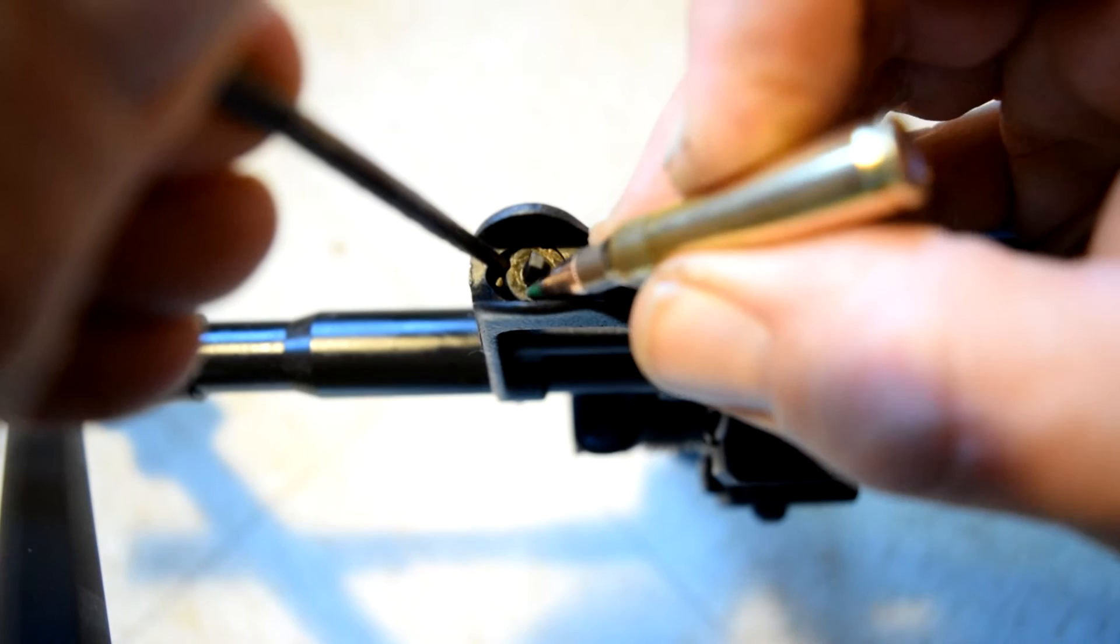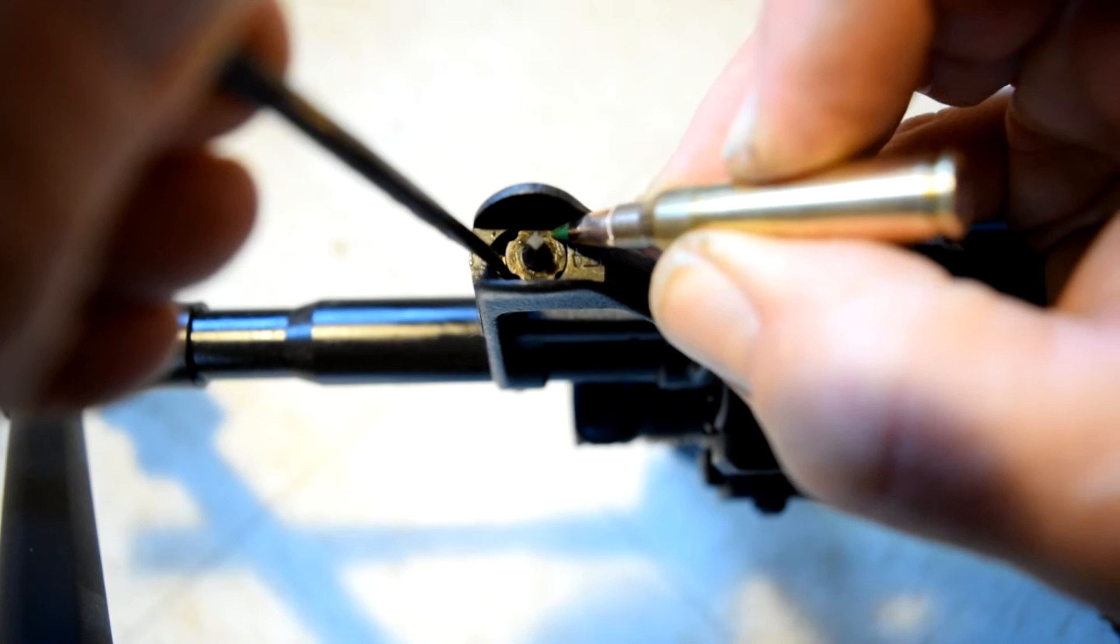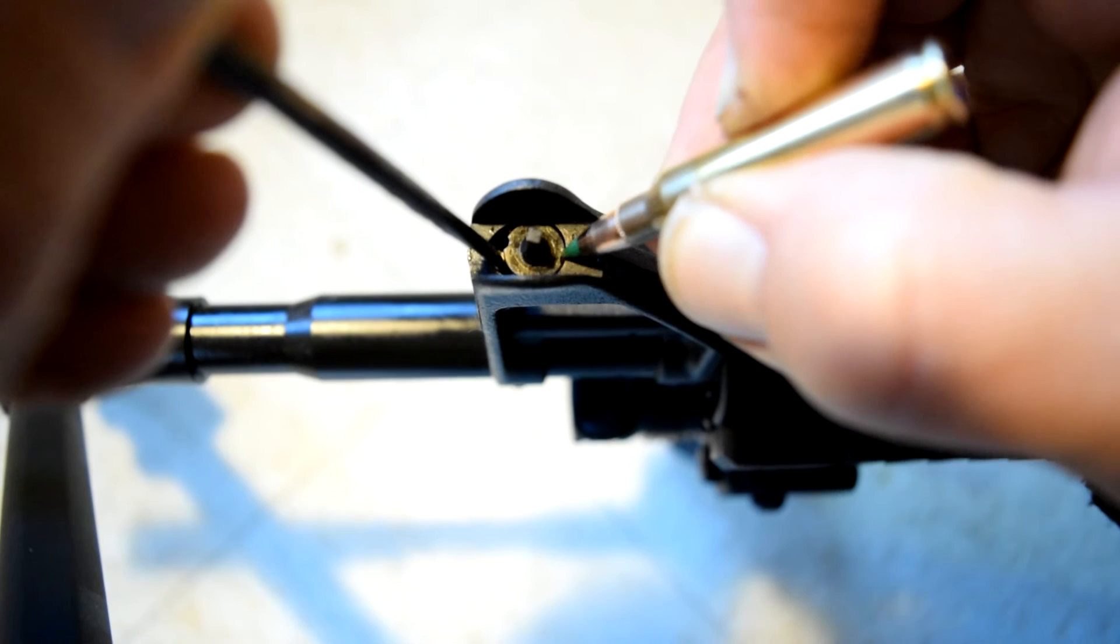Then you just turn the sight up or down whichever way it has to go until you get it level with the base. And just turn it until it locks in the detent.